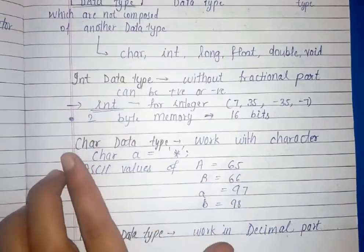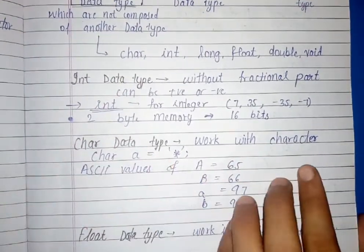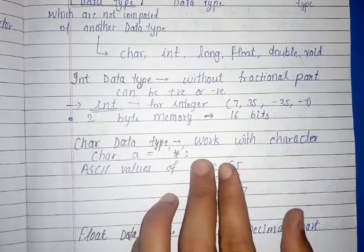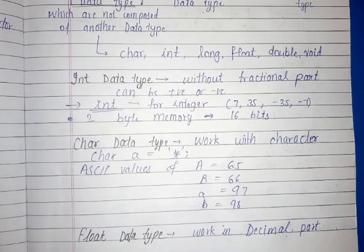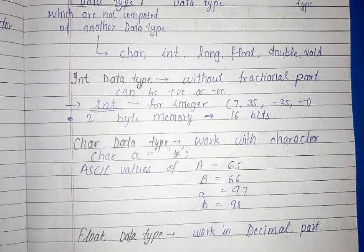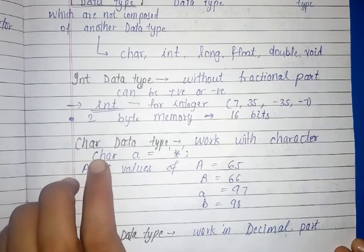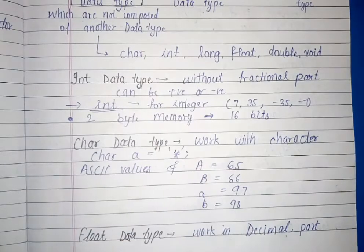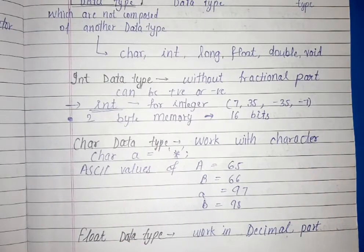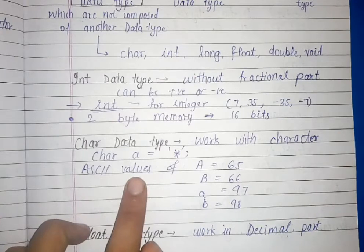Let's see the char data type. We call the char data type. Char A is equal to star. In this case, we have done that we are working with the character. Char will work with the character. Char will become star. In which we call the single inverted comma, we call the character. Single inverted comma means character is.